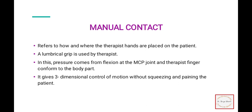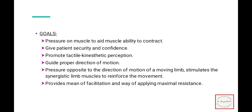The next component is manual contact, which refers to where the therapist places their hands on the patient. We usually use a lumbrical grip to hold the extremities of the patient. We use a lumbrical grip because the pressure comes from flexion at the MCP joint and the therapist's fingers conform to the body part, so this can control the motion without causing pain to the patient. The goals of manual contact are to aid the muscle's ability to contract, give the patient security and confidence through tactile or kinesthetic perception, provide direction to the motion, give resistance, and serve as a means of facilitation.